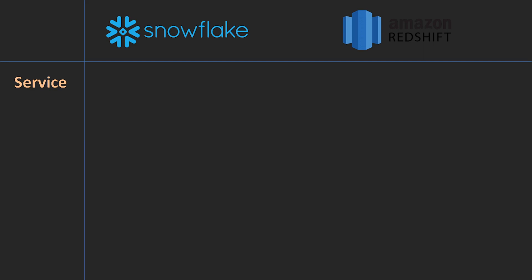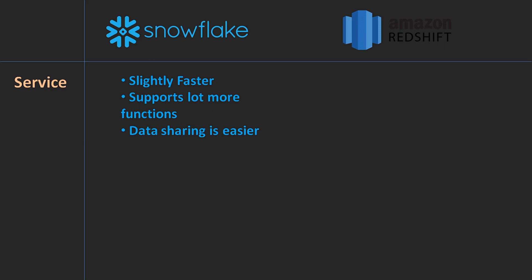Snowflake works on all three clouds whereas Amazon Redshift works on AWS only. Snowflake is also slightly faster — that's what I've personally realized, though it may be different for different locations. Snowflake also supports a lot more functions. For example, if you want to do fuzzy matching or some other specific operation on your data, Snowflake has a lot more tools to do that.